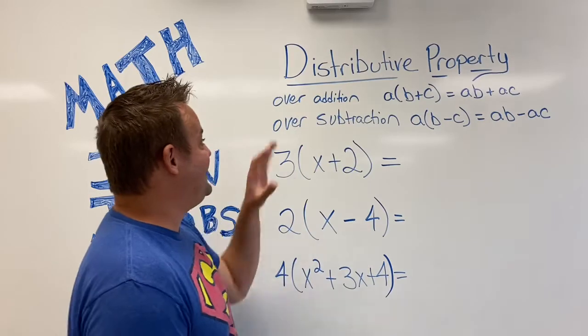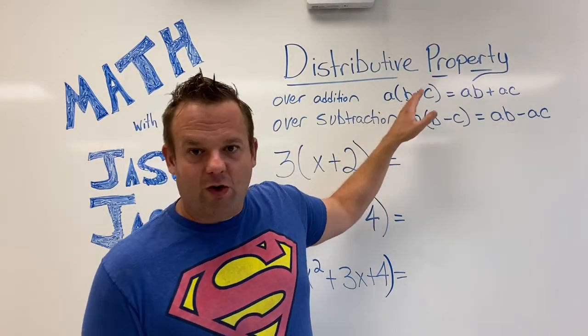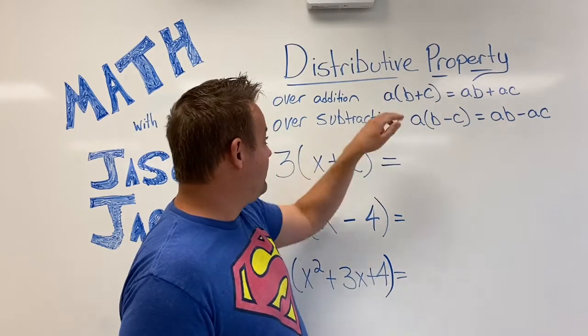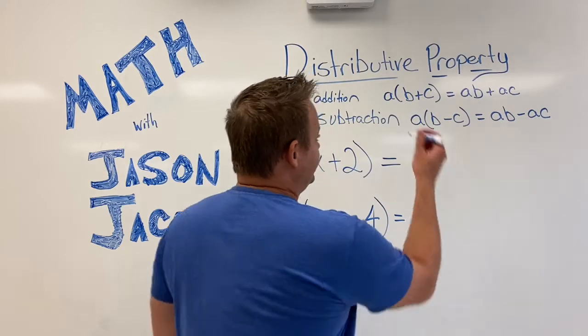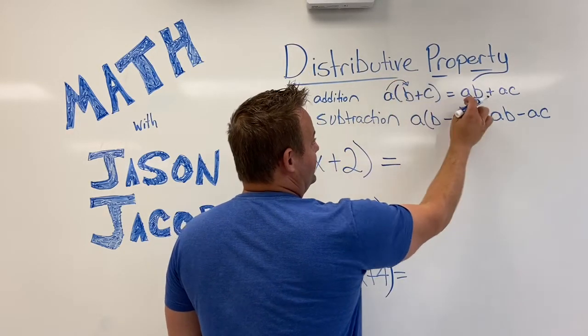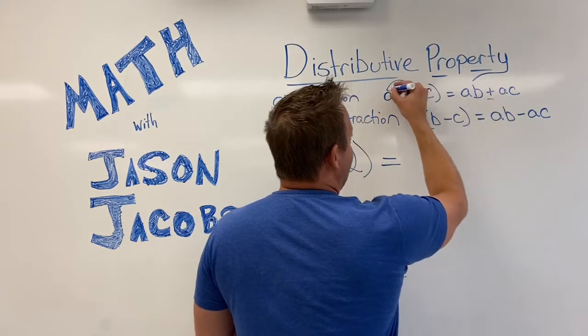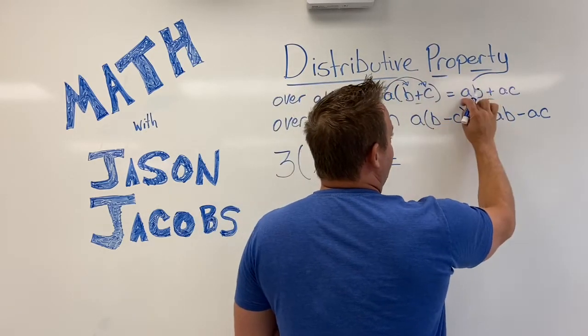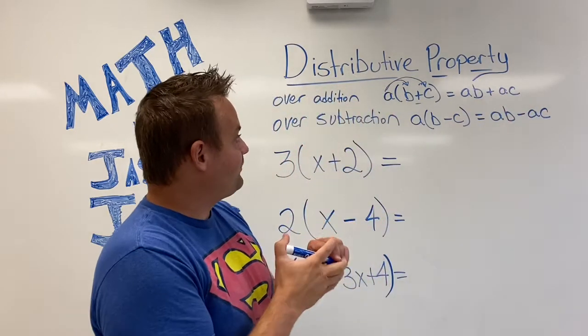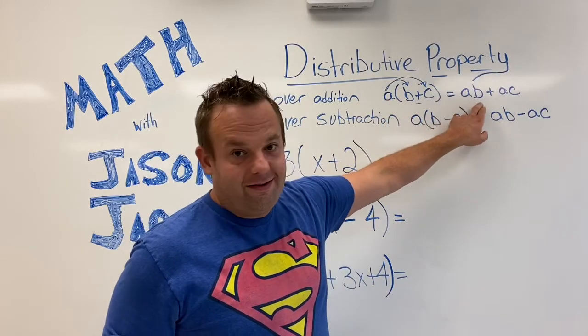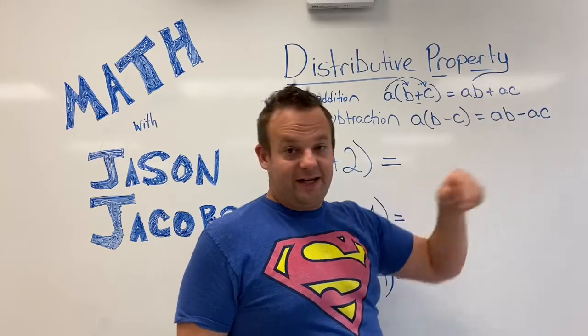So the distributive property over addition says that if you have a, and then when it's right by the parentheses guys, that means you multiply. So a times the quantity b plus c. So what I like to do, it looks like this: a times b plus, there's the over addition part, and then you go a times c. So a times b plus a times c. So basically the a distributes to the b and the a distributes to the c, just like that.